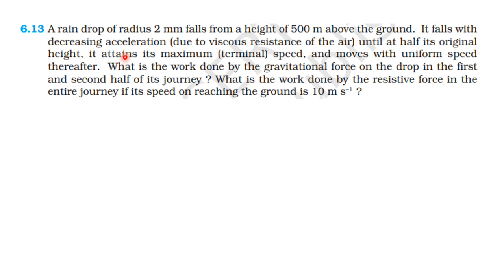From the NCERT textbook, from the topic Work Energy Power, let us continue Exercise Sum 6.13. A raindrop of radius 2 mm falls from a height of 500 m above the ground. It falls with decreasing acceleration due to viscous resistance of the air until at half of its original height, it attains its maximum terminal speed and moves with uniform speed thereafter.